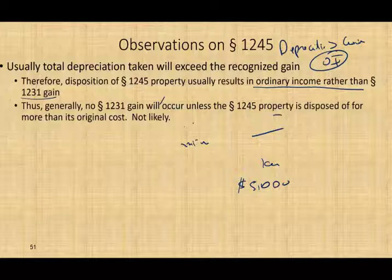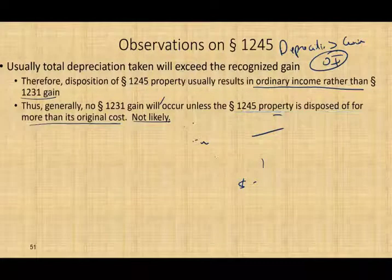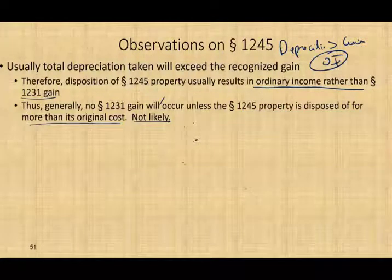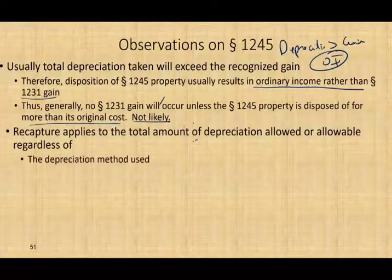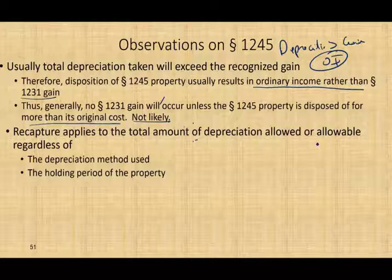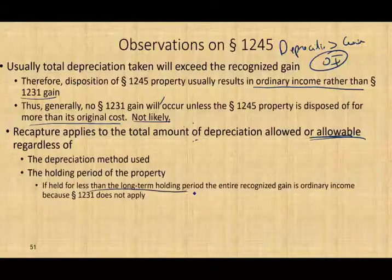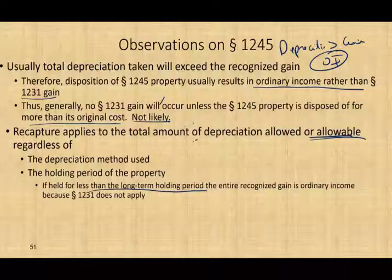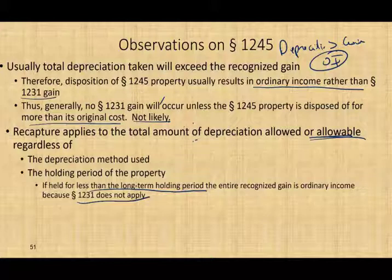Generally, no Section 1231 gain occurs unless Section 1245 property is disposed of for more than its original cost — not a likely event. Also important: recapture applies to total depreciation allowed or allowable, regardless of the depreciation method used or the holding period. Whether you actually took the depreciation or not, you must assume it. And remember — Section 1231 requires long-term holding period, so if held less than one year, the gain is always ordinary income.